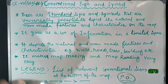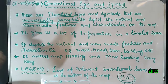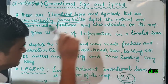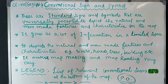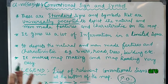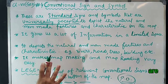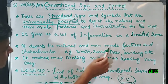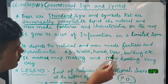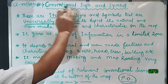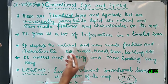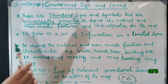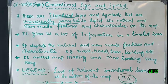Conventional signs and symbols make map making and map reading very easy. They also give us a lot of information in a limited space. Since these signs and symbols are universally accepted, they are easy to understand. They depict the natural and man-made features and characteristics — examples include rivers, roads, trees, buildings, railway tracks, boundaries, and many more.